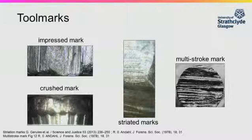The third is crushed tool marks, such as pliers cutting wires. And the final category is for multi-stroke tool marks, such as a saw being used to cut wood.